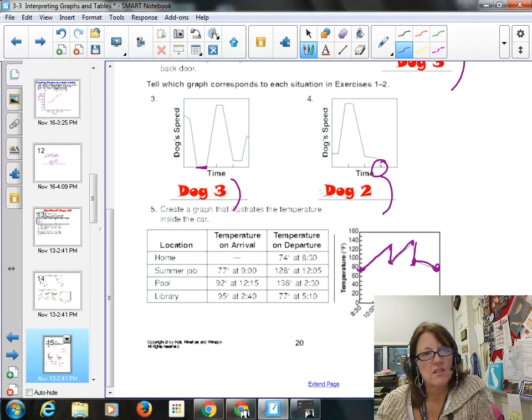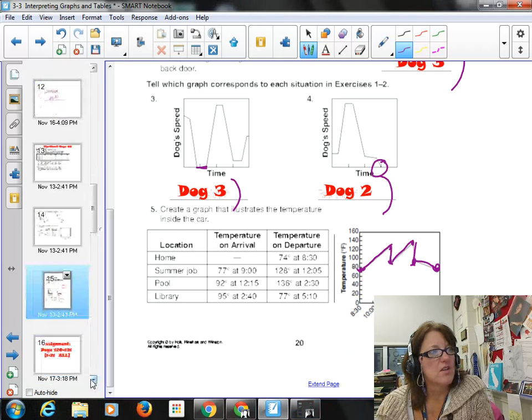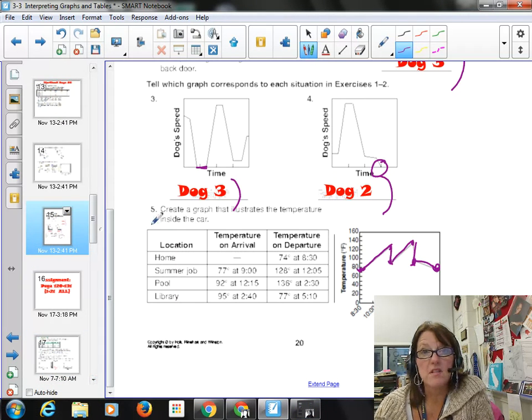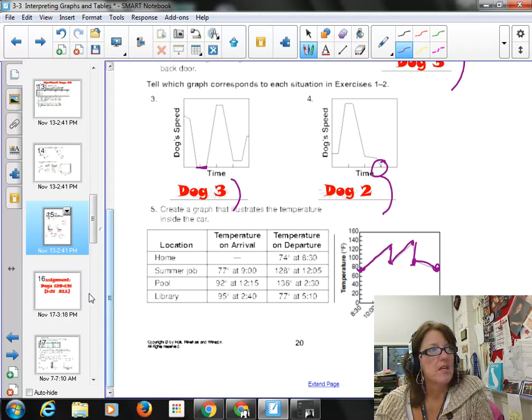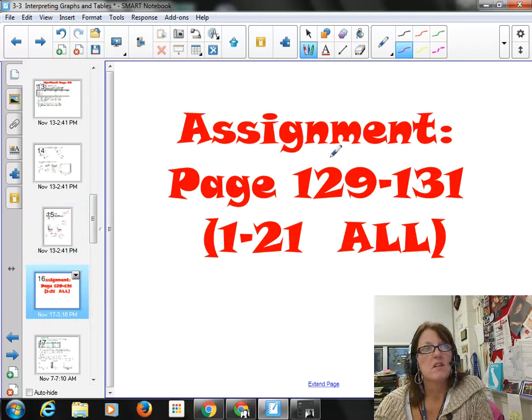Now, this is kind of challenging, because it's not just a clear direct answer, but this is what you're working on for tomorrow. So you've got your workbook page done, awesome. Your assignment for tomorrow is in the textbook, pages 129 to 131, and you'll do 1 through 21, all of them. It'll go faster than you think. Good luck, and may the force be with you.